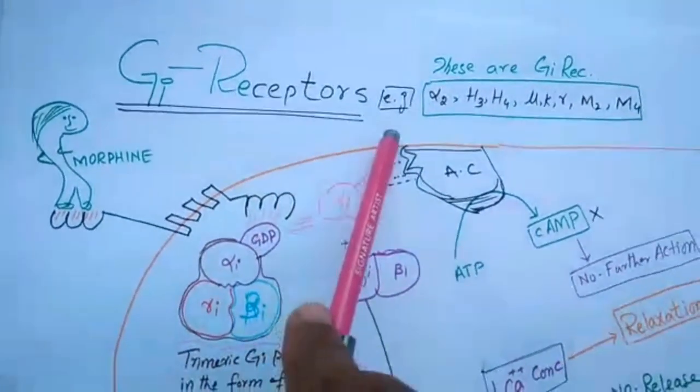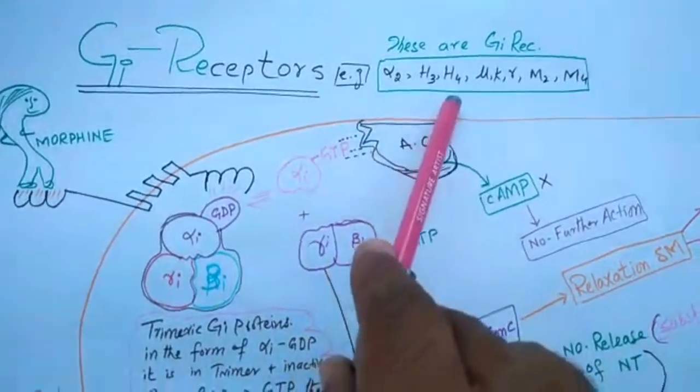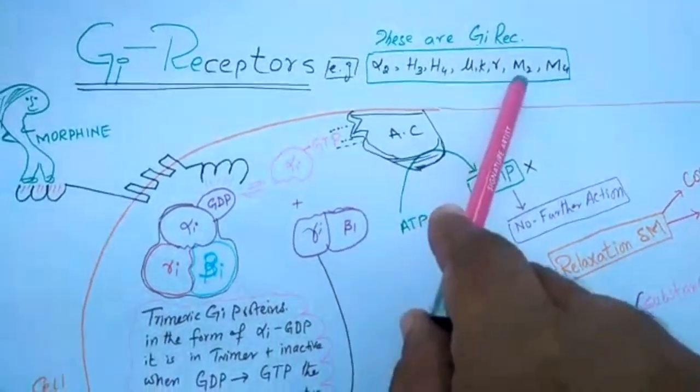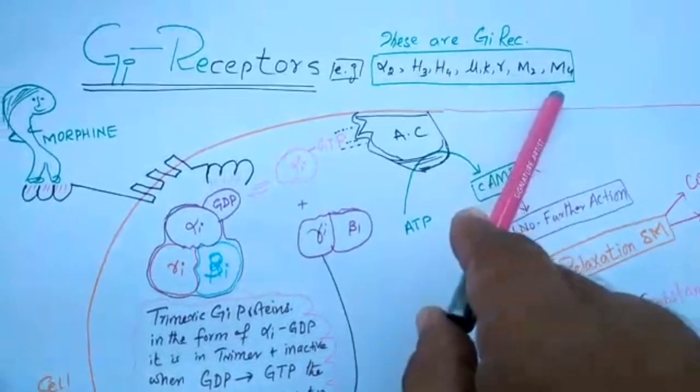Examples of these receptors are alpha-2 receptor, H3, H4, opiate receptor, muscarinic 2, and muscarinic 4.